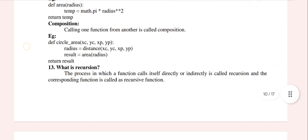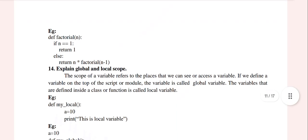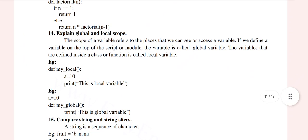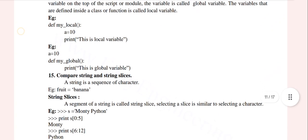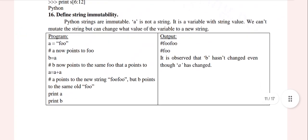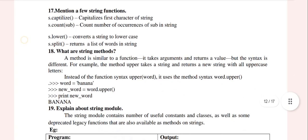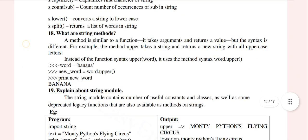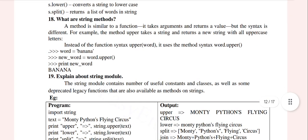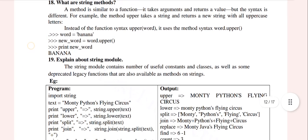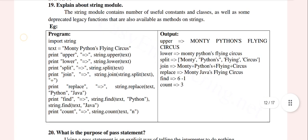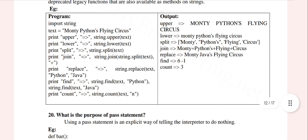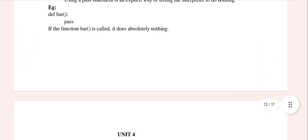Explain about string module — it is a very important question. Explain the global and local scope. Explain roughly about string module. This is a program with output that you can see. This is very important.